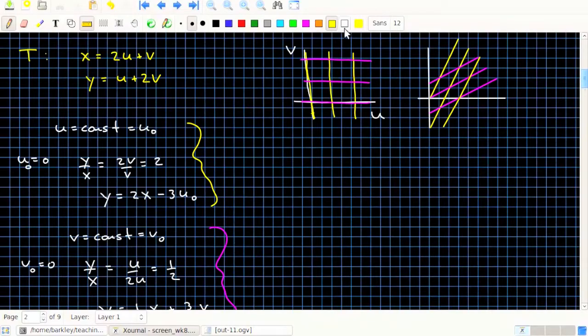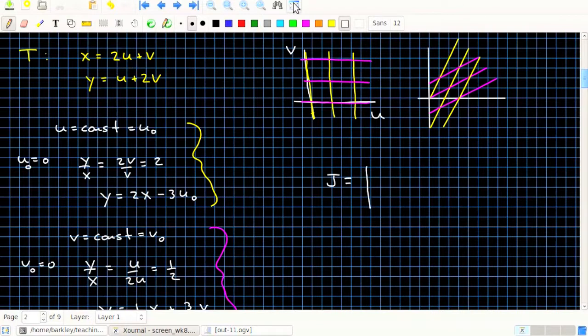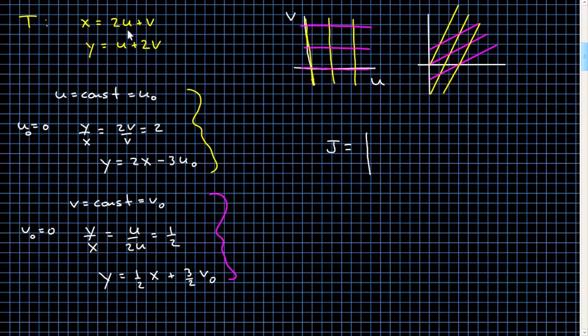All right. So the final thing is this Jacobian, or the Jacobian of the transformation is the determinant of the coefficients of the transformation, or more generally, you could actually do the partial derivatives, which will give you the same thing as these coefficients. So it's the determinant 2, 1, 1, 2. Okay. So that determinant is 4 minus 1, 4 minus 1 equals 3.